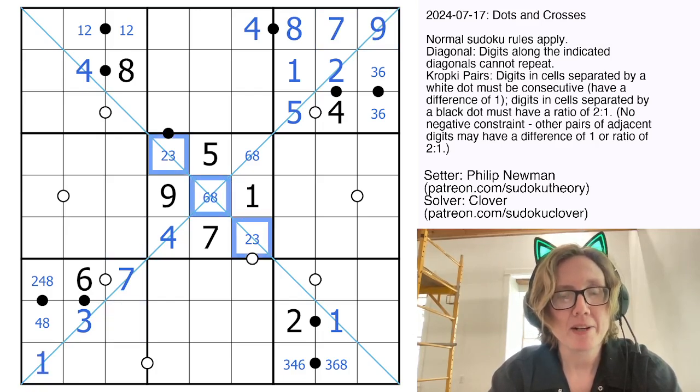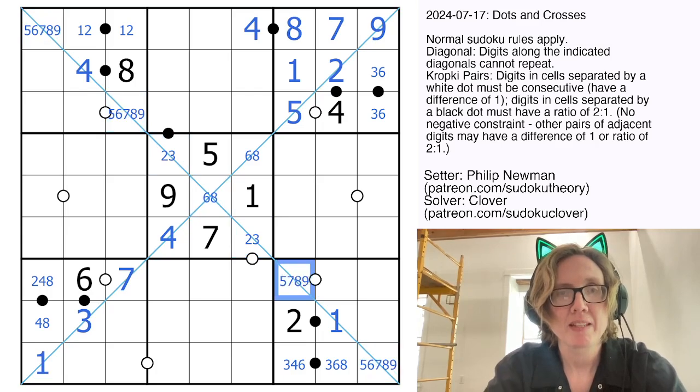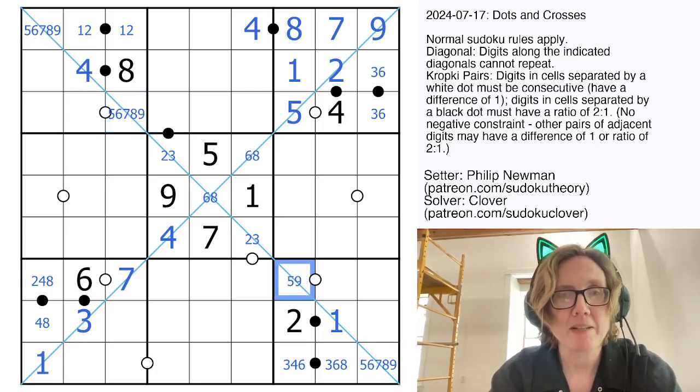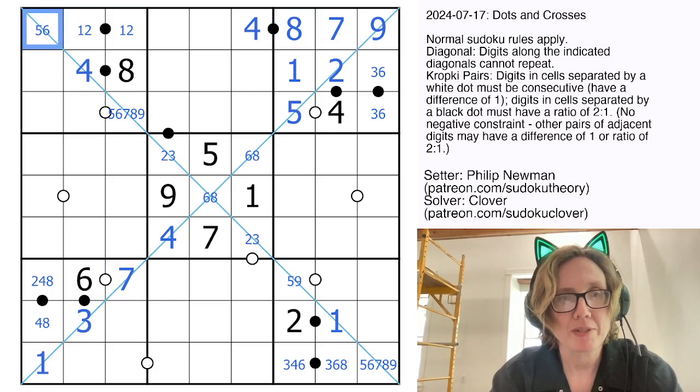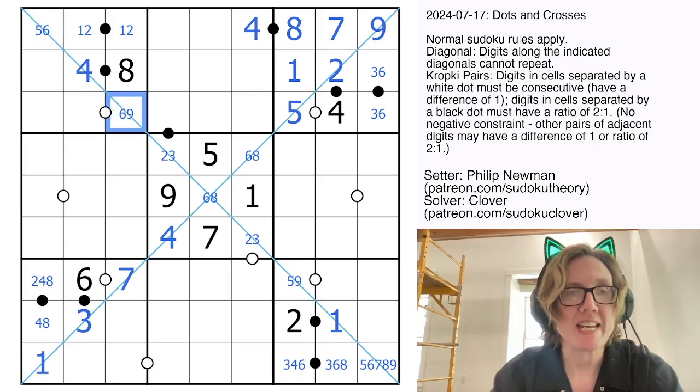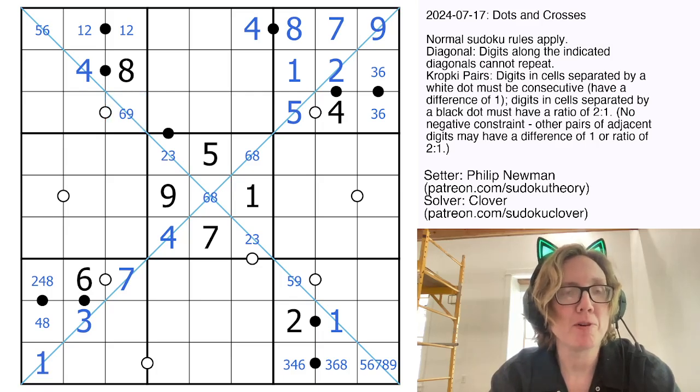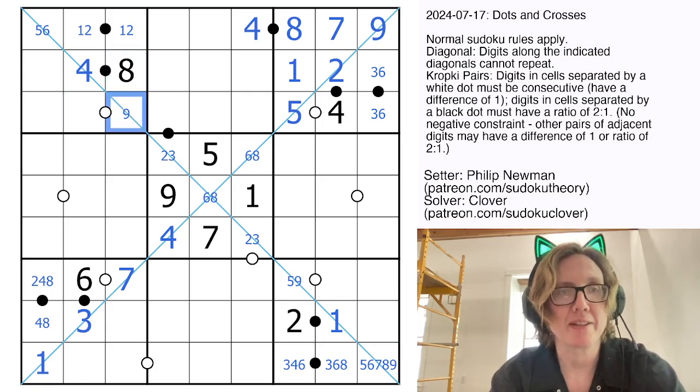Now this diagonal, we already have 1, 2, 3, and 4. We need 5, 6, 7, 8, and 9. That can't be 6, 7, or 8 because we have those three digits seeing it. This can't be 7, 8, or 9, so that could be 5 or 6. This can't be 5 or 7 or 8, and it also can't be 9 because if it was a 9, it would have to be partnered with an 8, and there's already an 8 in the region.